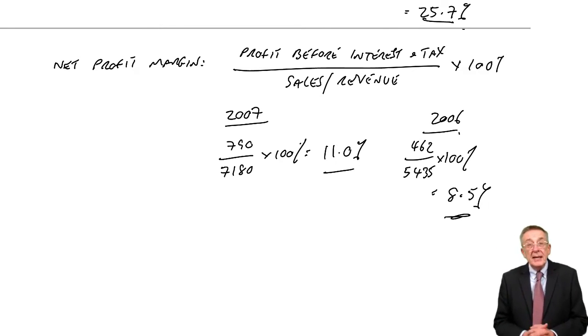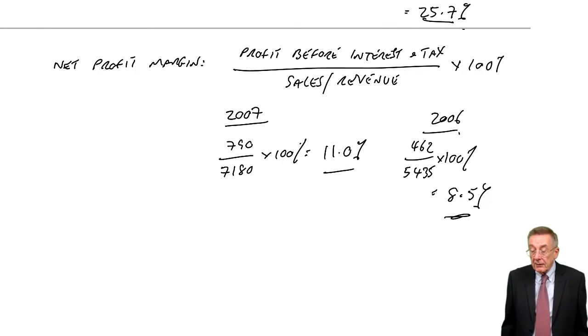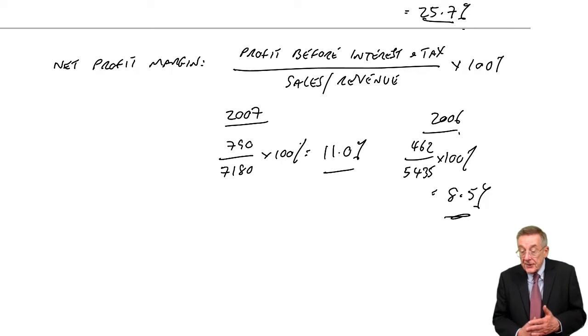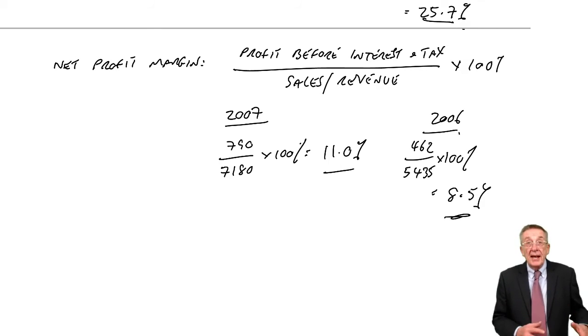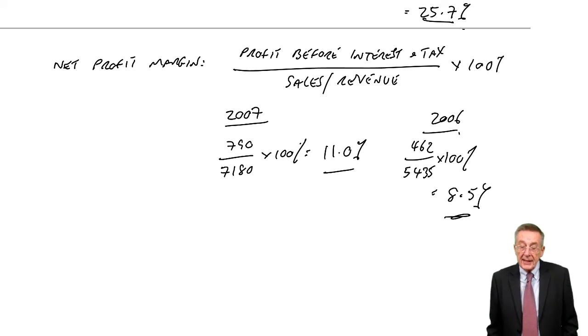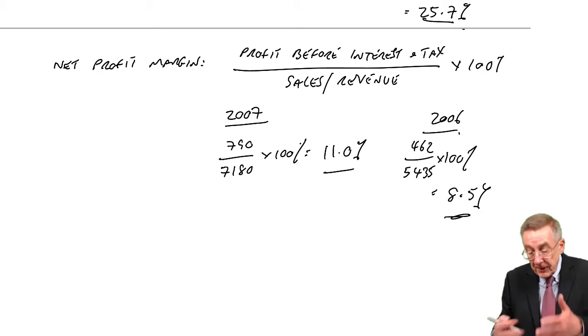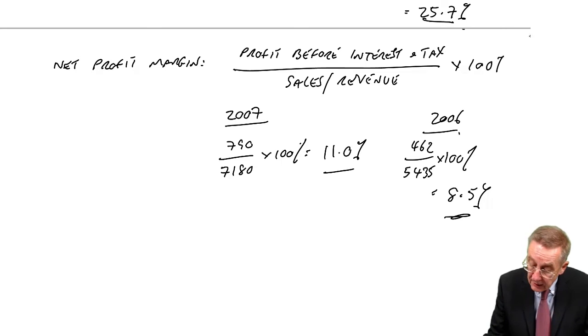So what does that mean? It means everything they're selling, they're making more profit on. Maybe they've increased the selling price, or maybe they've cut costs. But again, surely that's a good sign. We want to be more profitable in that sense. But that's measuring how much profit as a percent of sales, obviously. But the other thing is a bit less obvious.